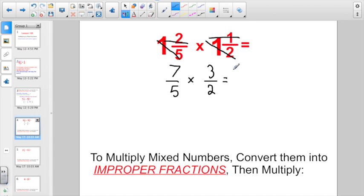7 times 3, that's going to give us 21. Denominator times denominator, 5 times 2, that's going to be 10. So I have 21/10. 10 divides into 21, 2 whole times. It's going to multiply back for 20 and subtract for 1, so 21/10 is really 2 and 1/10, just like we were practicing on those mental math quizzes.